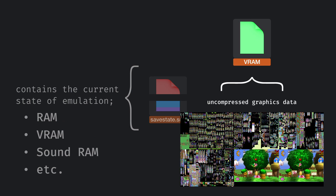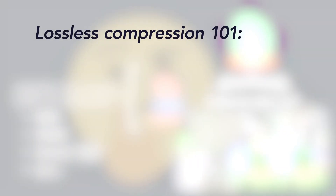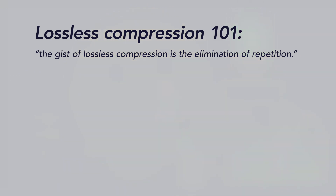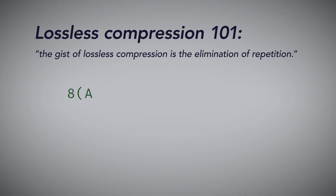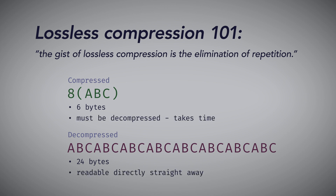Finding the corresponding compressed data was a bit harder — how do you even know what to search for? The gist of lossless compression is the elimination of repetition. It's much more efficient to store, say, '8 ABC' instead of 'ABC ABC ABC ABC ABC ABC ABC ABC'. After all, it's the same information condensed to a much smaller space, the only trade-off being that decompression takes more time.